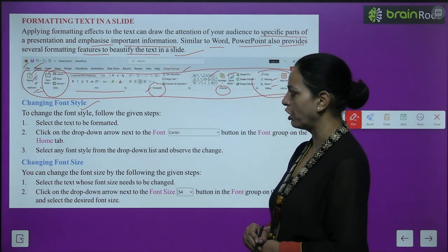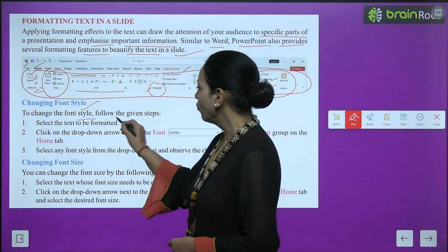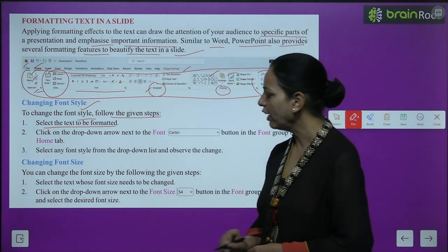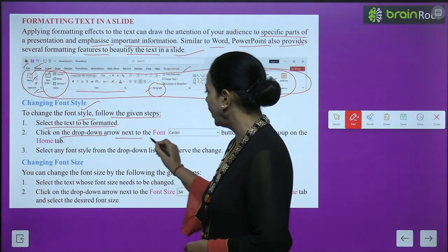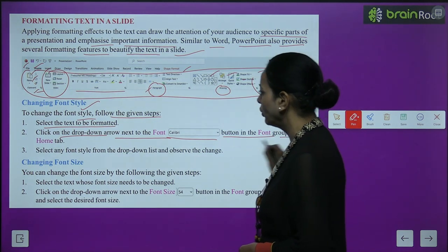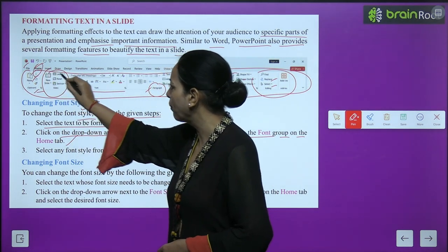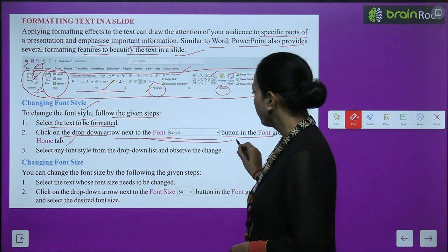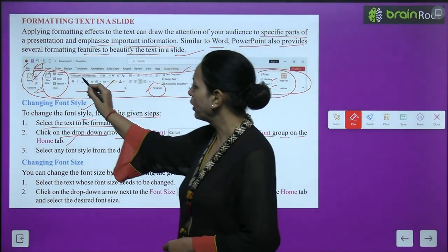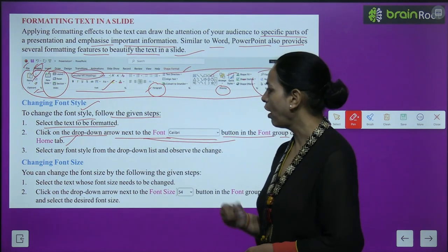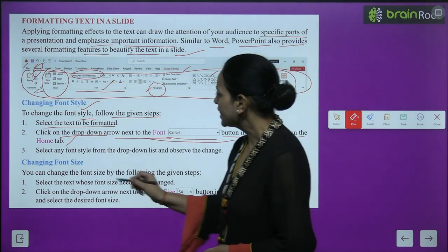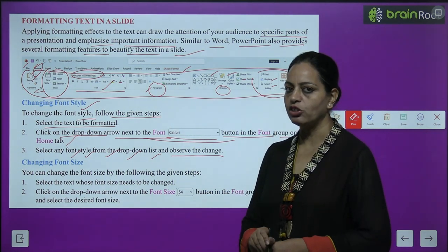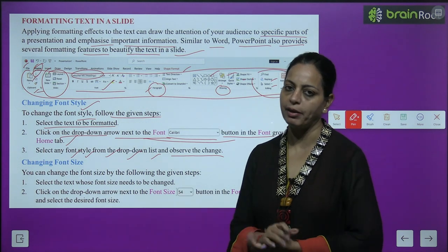Changing font style. To change the font style, follow the given steps: select the text to be formatted, then click on the drop-down arrow next to the font name in the Font group on the Home tab. Go to the Font group and click the Font button, then make whatever changes you want. Select any font style from the drop-down list and observe the change - the selected text will automatically change.